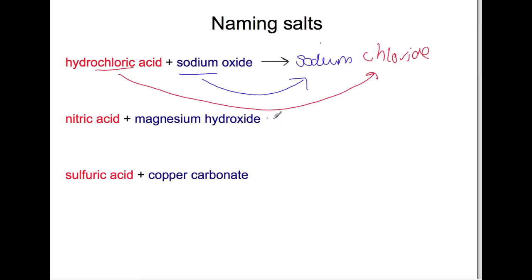Let's try the next example. We have magnesium hydroxide, so the metal part of the salt's name will be magnesium, and the non-metal part from the acid, nitric, is going to become nitrate.